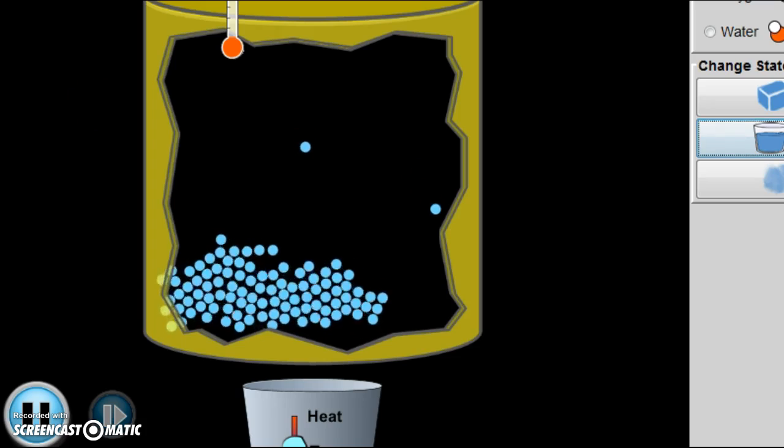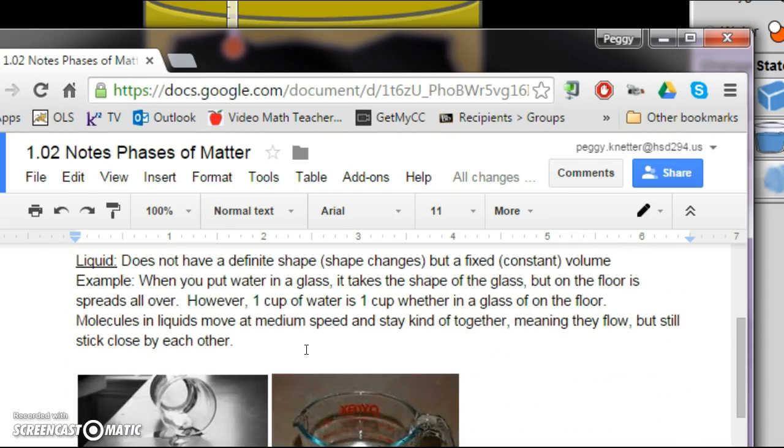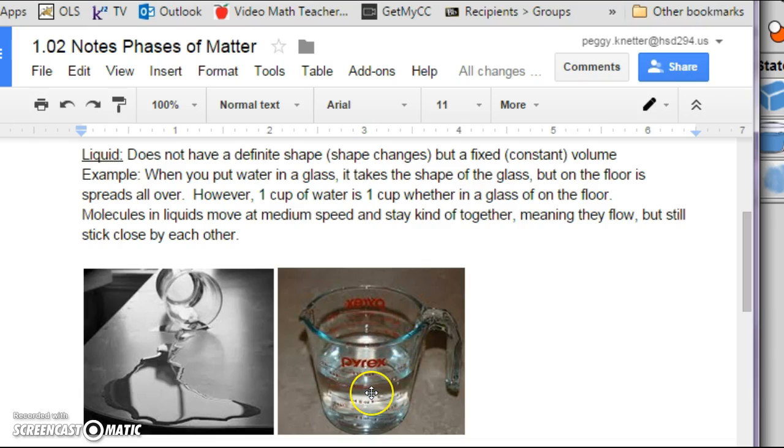All right, so in our notes, let's go ahead and add to liquid. So liquid does not have a definite shape, meaning the shape changes. If you have water and it's in the glass, it's the shape of the glass. If you spill the water on the floor or the table, it spreads out. But it does have a fixed or constant volume. What that means is, I measure this and I have one cup of water. If I spill it, I still have one cup of water. Or if I have a gallon of milk and I spill it all over the floor, not only do you have a very happy cat, you have one gallon of milk on the floor.